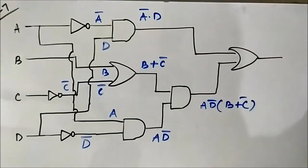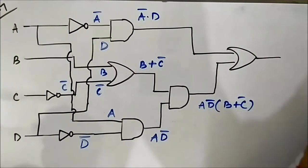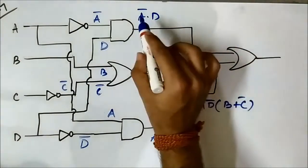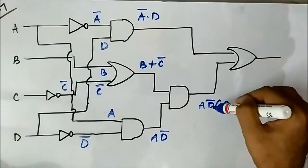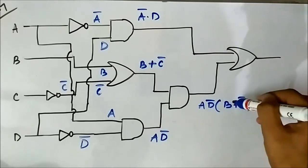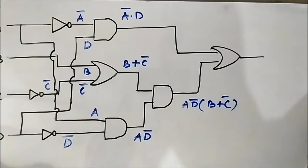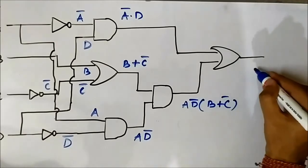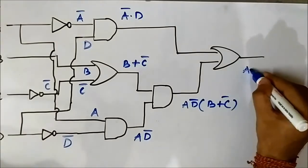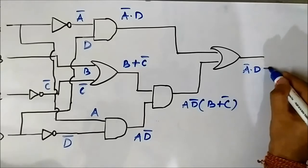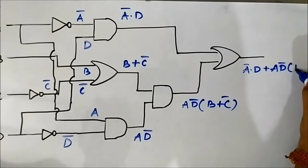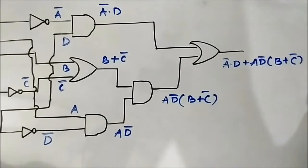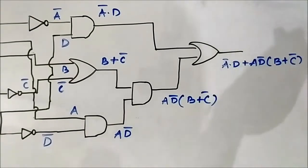The final level is this OR gate. One input is A complement AND D, and the second input is A·D complement · (B OR C complement). So the final output is: A complement·D OR A·D complement·(B OR C complement). This is the final output.